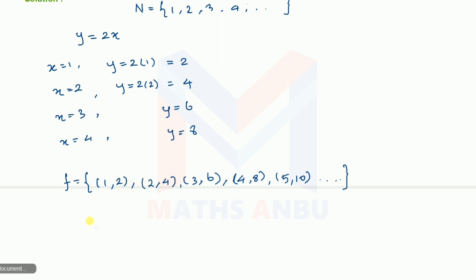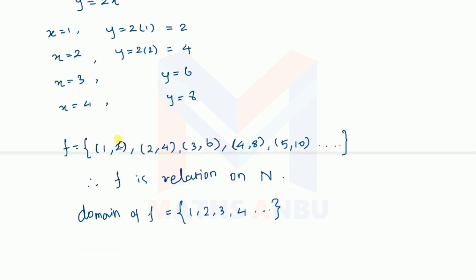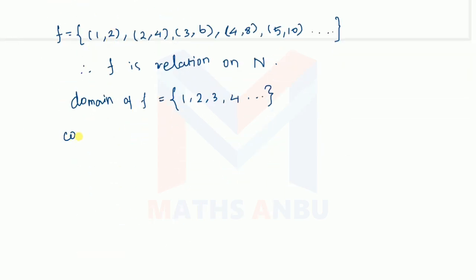f is a relation on natural numbers. If we look at the domain, natural numbers are there. So f is a relation on natural numbers. The domain of f is natural numbers. The co-domain of f is also natural numbers.